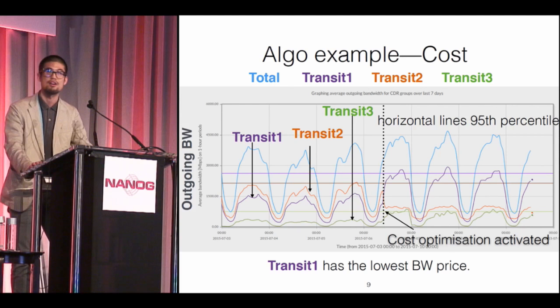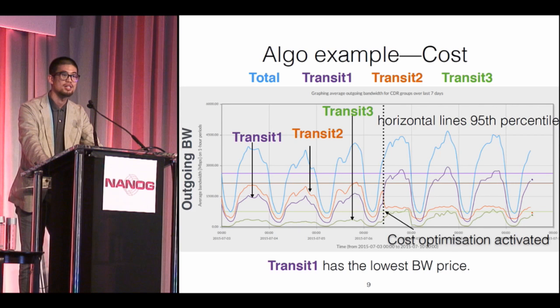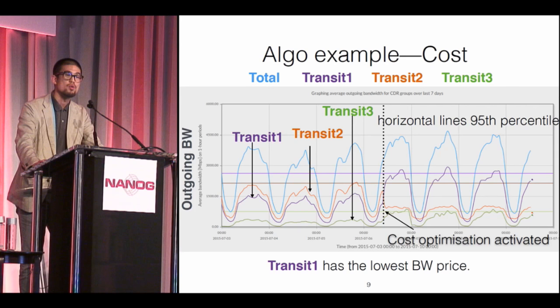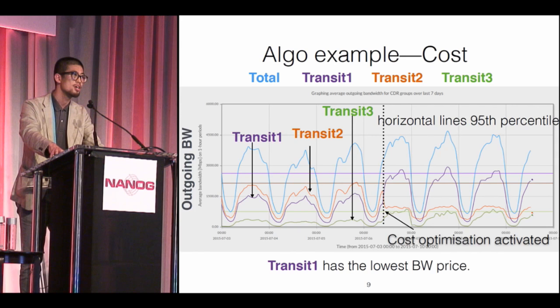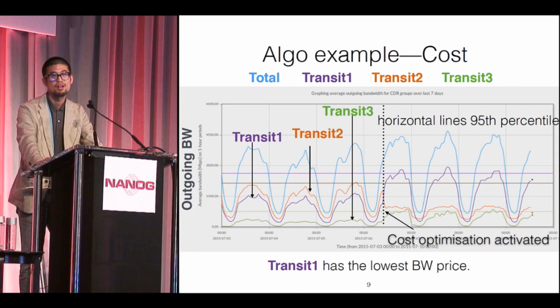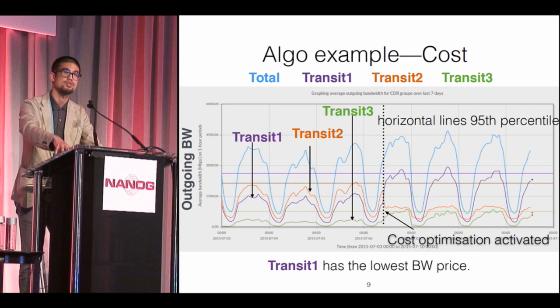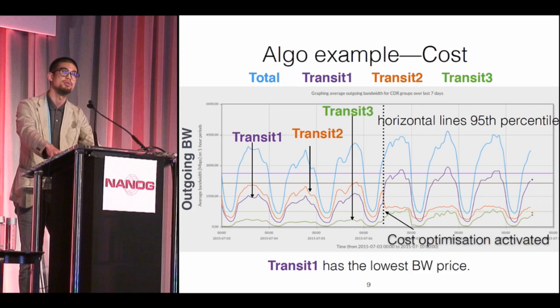Looking at the graph — before the optimization was activated, we have three transits. Transit one is the cheapest, transit two is the most costly, and before optimization began we were consuming more transit two than transit one, and both already exceeded the CDR rate. At the same time, transit three was largely underused, with its 95th percentile bandwidth far below the CDR rate. After optimization began, we see obvious increases in usage of transit one and transit three, and a decrease in transit two, which prevents even higher 95th percentile usage on transit two and eventually a smaller bill. On transit three, we push it as close as possible to the CDR rate.